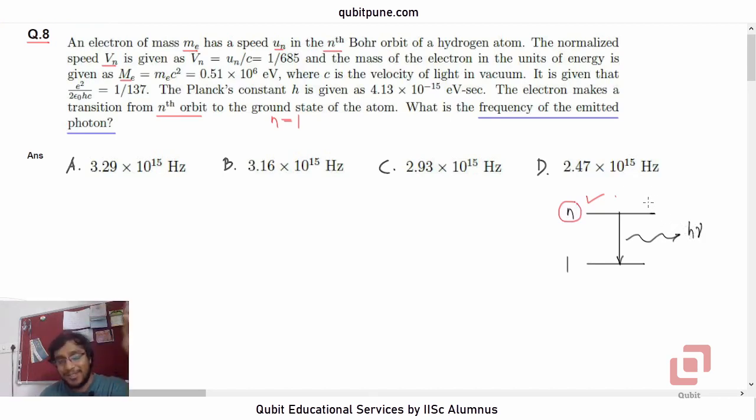If you look at the options, all of them are very close to 3: 3.29, 3.16, 2.93. This could be an indicator that we cannot approximate things. Sometimes if it is 20 upon 19 or 19 upon 20, we may tend to approximate it as 1 during our calculations, but we cannot do it for this particular problem. So we will start.